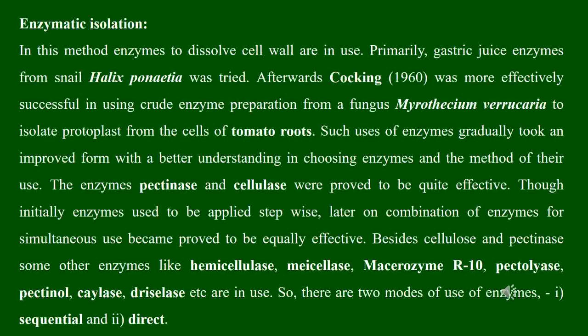Enzyme application for protoplast isolation can be of two types: sequential or direct. In the sequential method, enzymes are applied one after another. In the direct method, all necessary enzymes to remove the cell wall are applied together simultaneously.